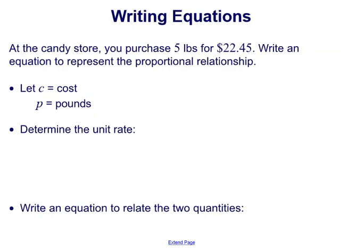Let's do another example. At the candy store, you purchased 5 pounds for $22.45. Write an equation to represent the proportional relationship. We're defining the variable c for cost and p for pounds of candy instead of pounds of tomatoes. The process is the same.